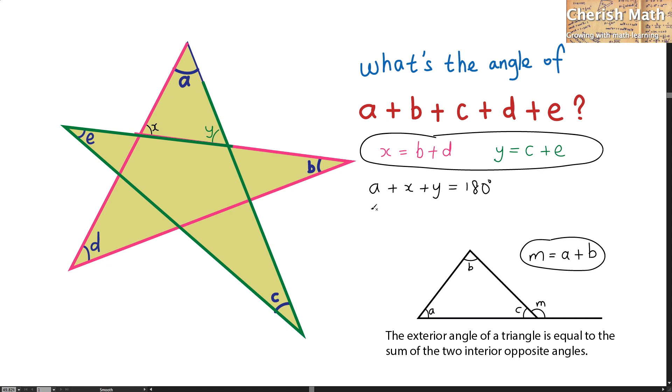So, all we need to do is substitute the value of X and Y into this equation. We're going to get X here as B plus D, and the value of Y is C plus E.